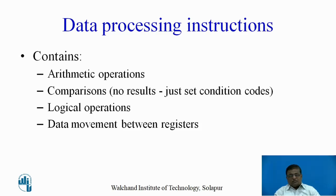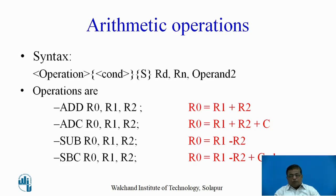These data processing instructions support different operations: arithmetic operations, comparison operations, logical operations, and moving data between registers. For arithmetic instructions, the syntax is: first, the operation to be performed; then the condition; then the S bit — if the S bit is 1, the status register will be affected; if S is not mentioned, the status register is not affected; then the destination register, source operand 1 (Rn), and operand 2.